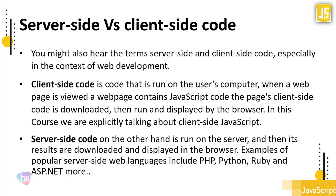In this course we are explicitly focused on client-side JavaScript to learn more about client-side JavaScript functionalities. Server-side code, on the other hand, runs on the server and its results are downloaded and displayed to the browser. Examples of popular server-side languages include PHP, Python, Java, Ruby, ASP.NET C#, and many more languages which require compilation at the server-side.